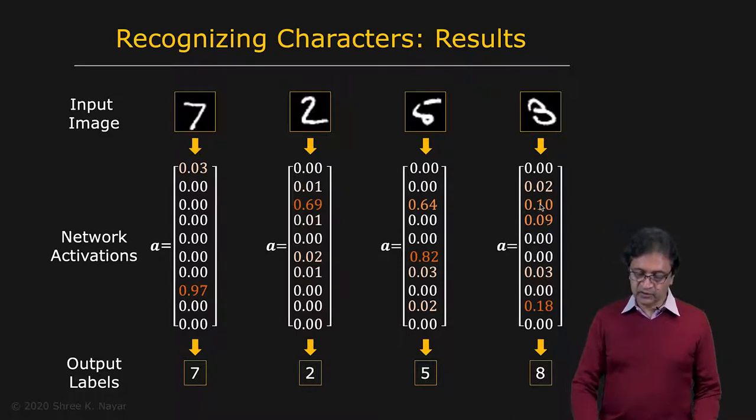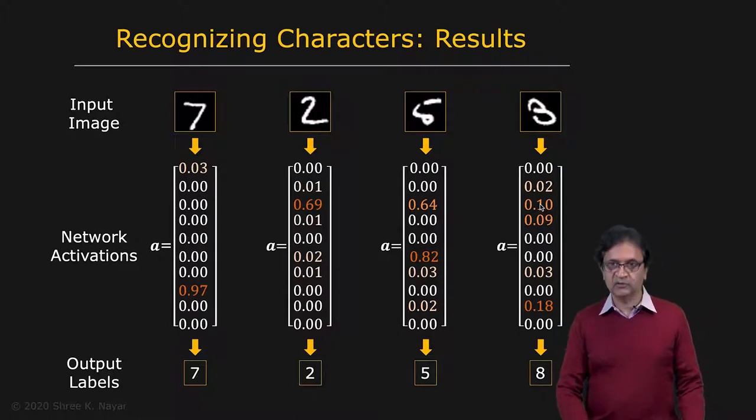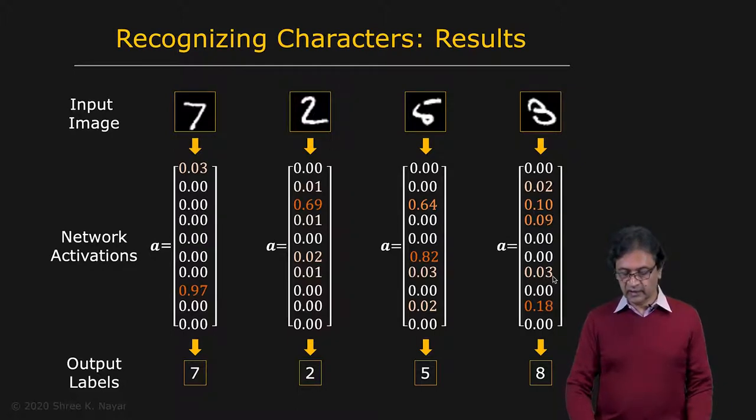And this one is more interesting. We don't really know. If you ask me what this is, it could be a three, it could be an eight. But here you see that you get large values for a two and a three and eight as well. And so therefore, eight ends up winning in this particular case.